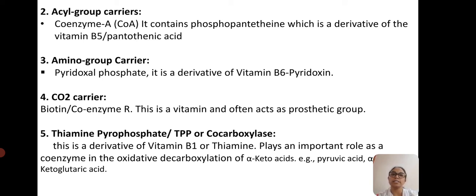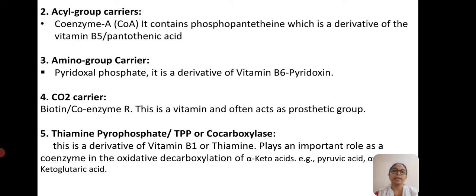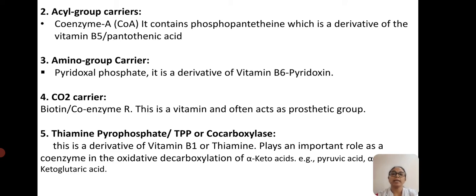Coenzyme R (biotin) often acts as a prosthetic group — tightly bound to the apoenzyme. The last type is thiamine pyrophosphate (TPP), also called cocarboxylase, which is a derivative of vitamin B1 (thiamine). It plays a very important role as a coenzyme in the oxidative decarboxylation of keto acids — for example, pyruvic acid or alpha-ketoglutaric acid. These are the five important coenzymes and prosthetic groups that assist in enzymatic activity.